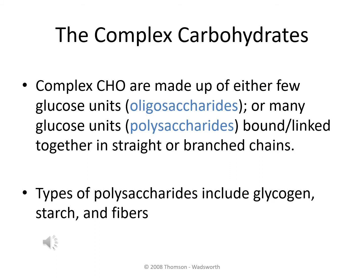We took a look at the simple carbohydrates, which included the monosaccharides and disaccharides. Now we're going to move on to the next category, which are the complex carbohydrates. Complex carbohydrates are made up of either just a few glucose units linked together, or they may be many glucose units linked together to form very long strands. Those that only have a few glucose units linked together are referred to as oligosaccharides. If there are many glucose units linked together, they're referred to as polysaccharides. These polysaccharides may consist of sugars linked in very straight, organized chains, or they may be very highly branched. The polysaccharides that we will take a look at include glycogen, starch, as well as the fibers.